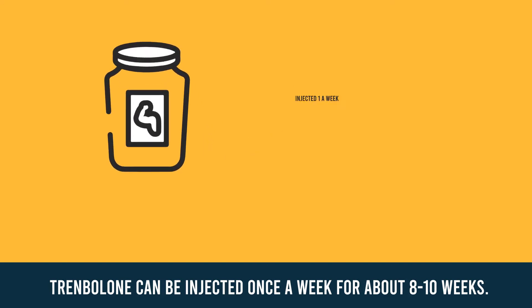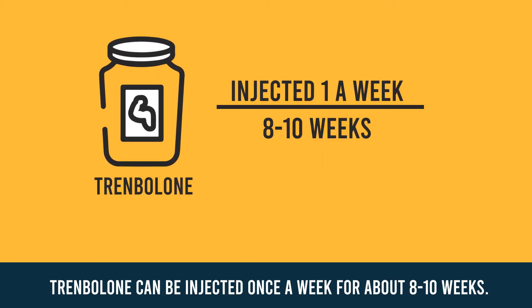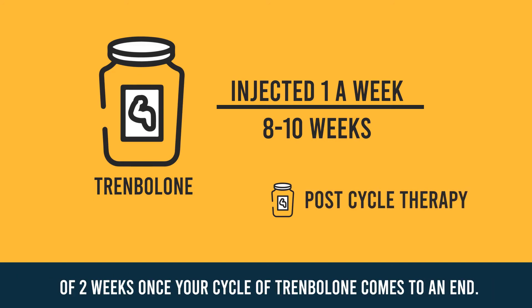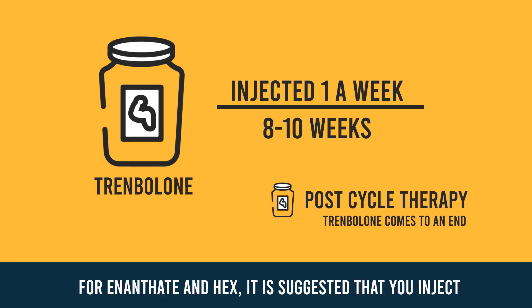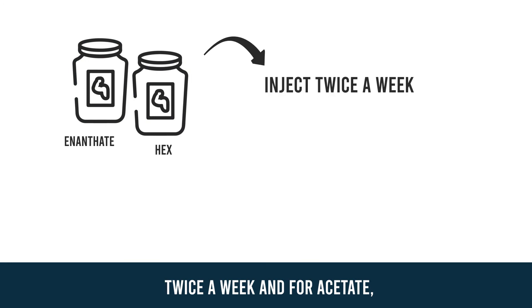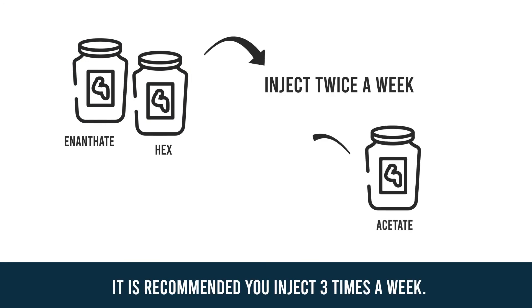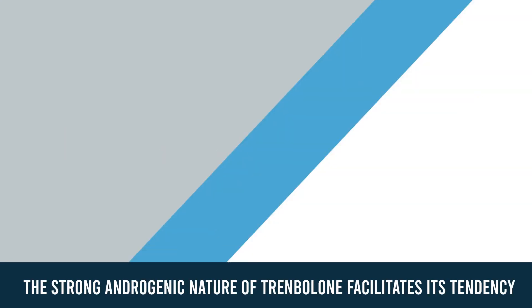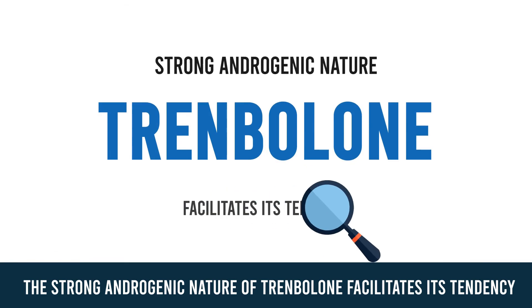Trenbolone can be injected once a week for about 8 to 10 weeks. It is also recommended to take a post cycle therapy lasting an average of two weeks once your cycle of trenbolone comes to an end. For enanthate and hex it is suggested that you inject twice a week, and for acetate it is recommended you inject three times a week.